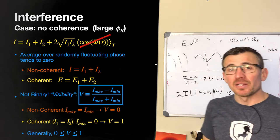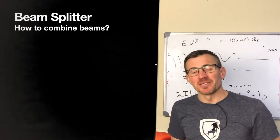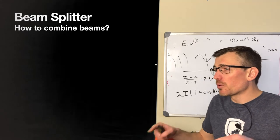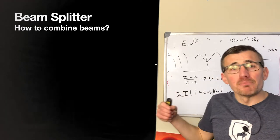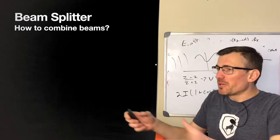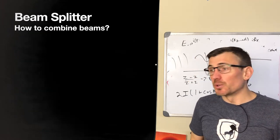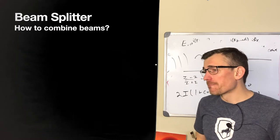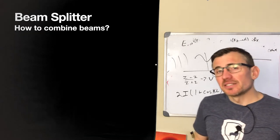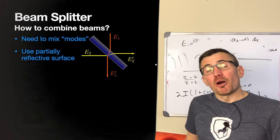Now let's talk about practical implementation of splitting up beams — we use a beam splitter. It's a partially silvered mirror. A field going in, I1, is partially transmitted and partially reflected. Mode two comes in the other way and is reflected, mixing with mode one. A subtlety is that from the Fresnel equations, an external reflection gives a pi phase shift while an internal reflection does not, and we have to take care of that.